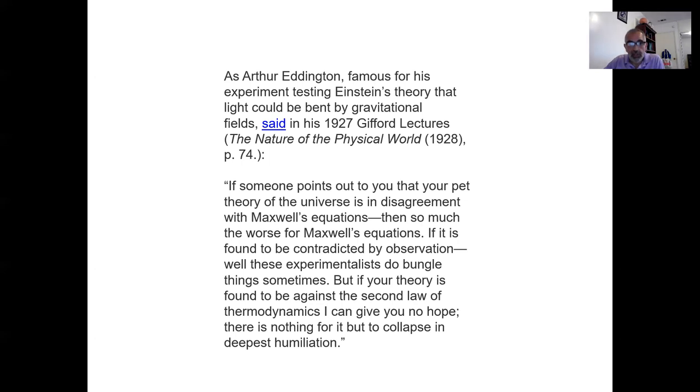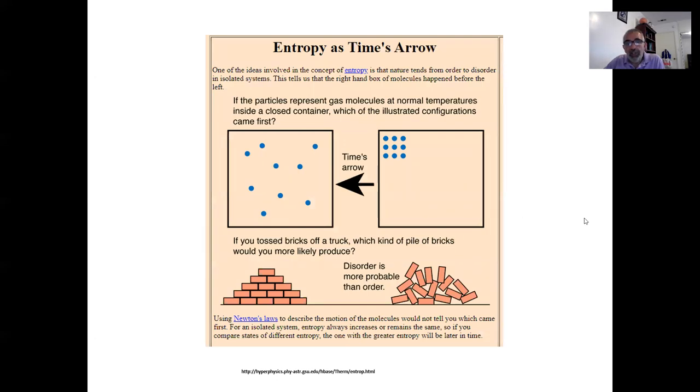So another way to understand entropy is that things become more disordered with time, and that this always happens. So that basically, if you take a box that is a vacuum and put some molecules in it, over time, the molecules will then spread out in the box. Here is a more ordered arrangement. Here is a more disordered arrangement. And that disorder increases with time. And we will always know that this arrangement came before this arrangement. If you toss a bunch of bricks off a truck, they're not going to fall in an orderly stack. They're going to fall in a more disordered pattern. So that disorder increases with time.